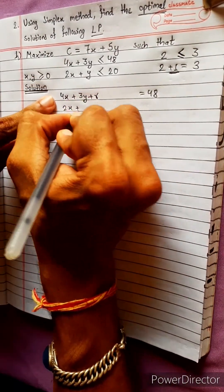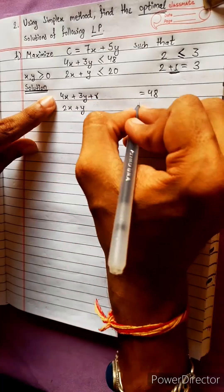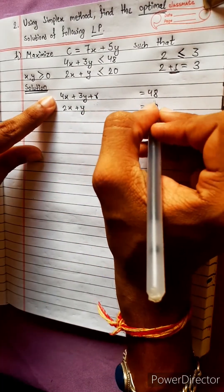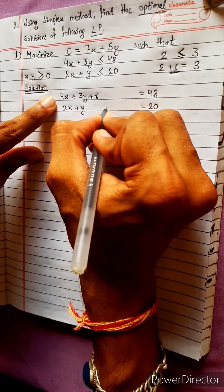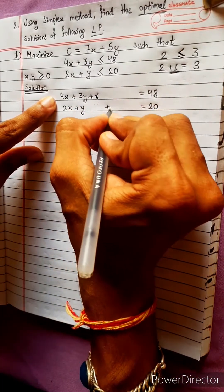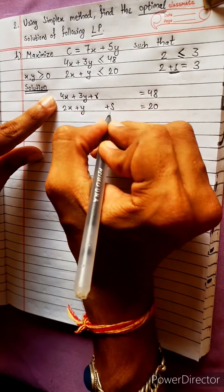2x plus y, the third element is equal to 20. The third element is 0, plus s equals 0.